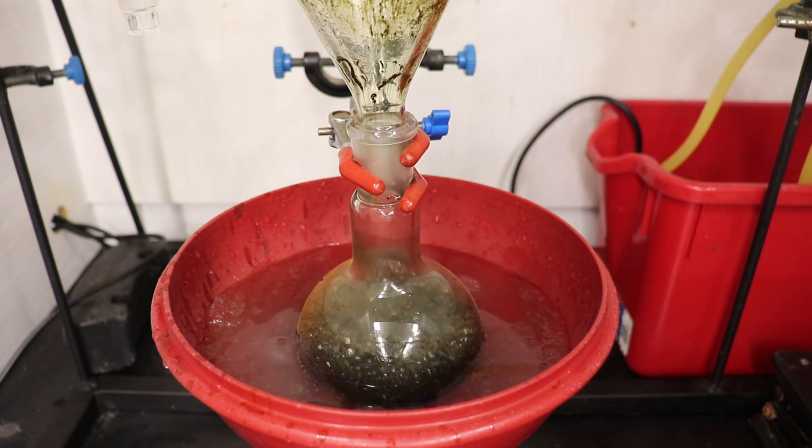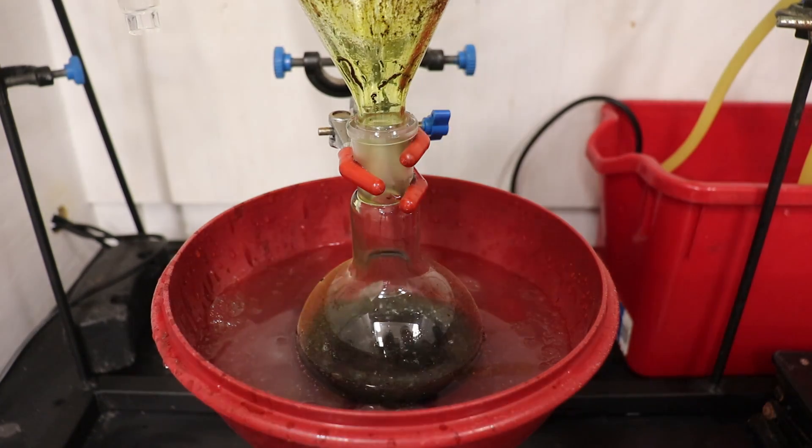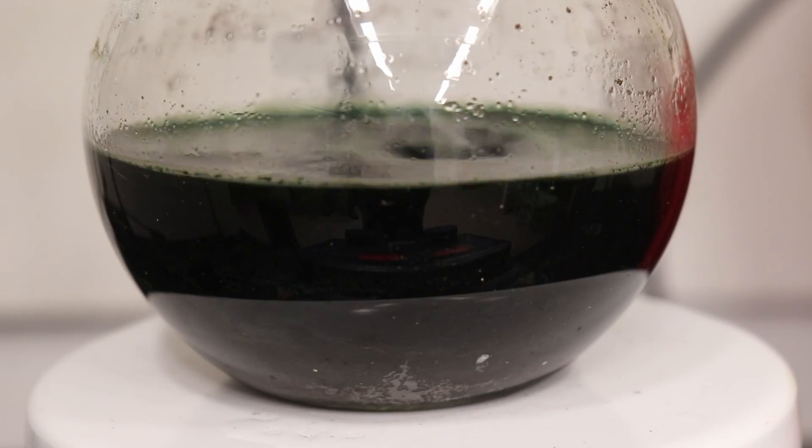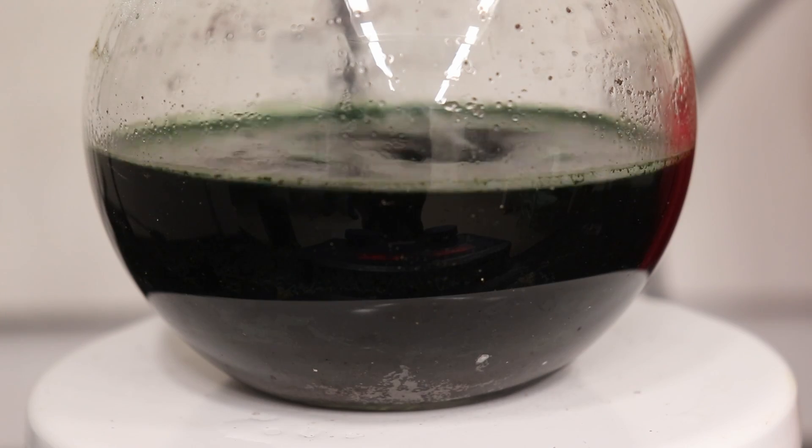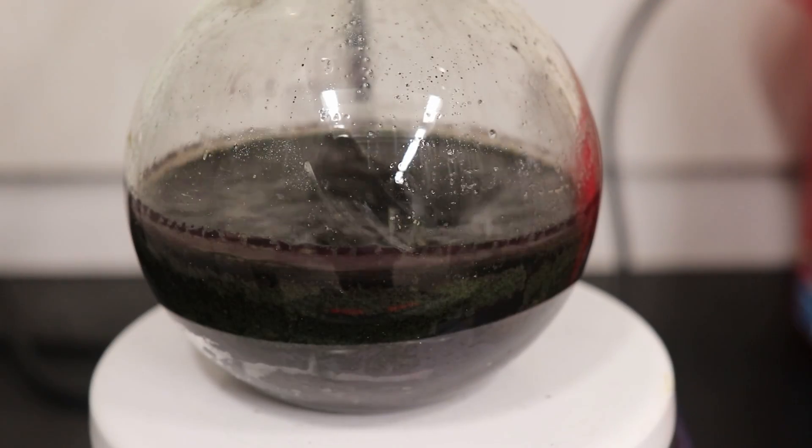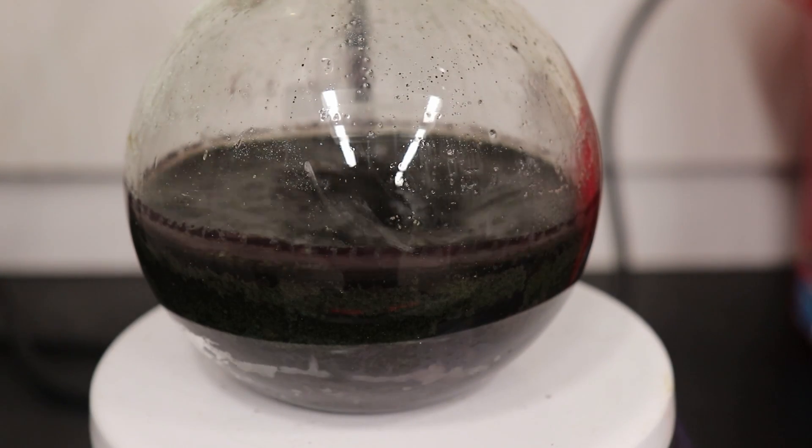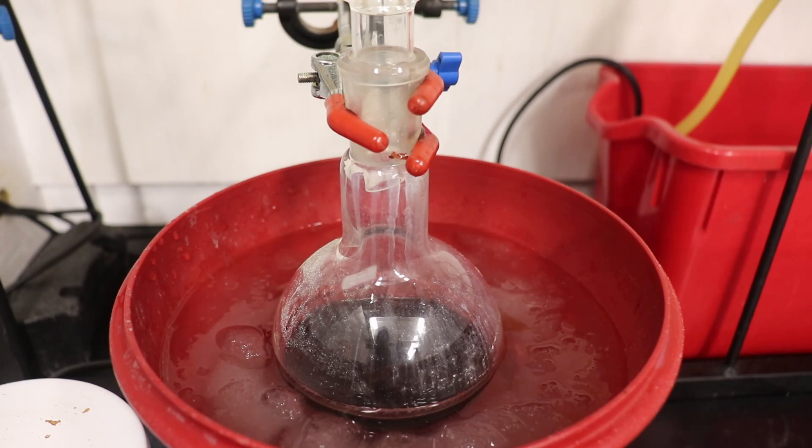The funnel was then swapped out for a condenser and the mixture was refluxed for one hour. Over time, the coloration of the solution changed from a dark green to a brown with the formation of a thick deposit at the bottom of the flask. The flask was then cooled in an ice bath.